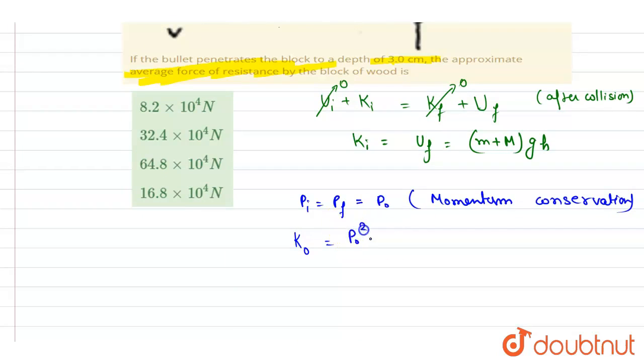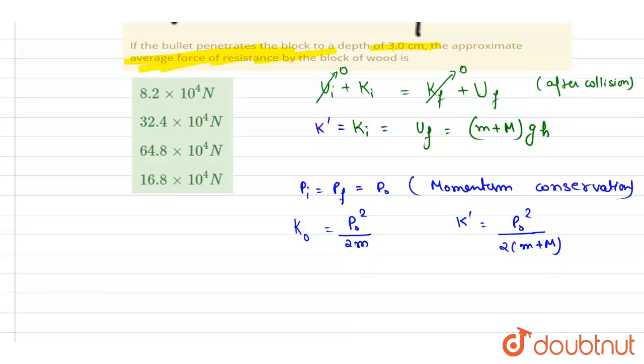If you see, the final kinetic energy, let's say this is K dash. K dash will be - now the momentum will be the same but the mass is changed. So this will be the kinetic energy. Now we will write down the work-energy theorem. I will write down the work done by the force equals the change in kinetic energy.